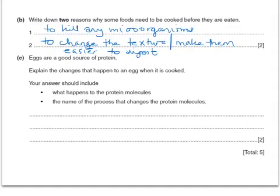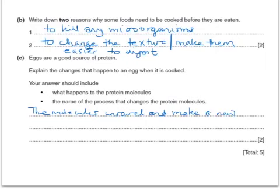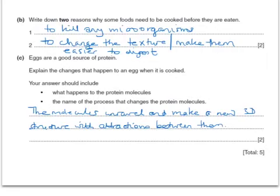The second part of the question says: eggs are a good source of protein — explain the changes that happen to an egg when it's cooked. Your answer should include what happens to the protein molecules and the name of the process that changes them. The protein molecules unravel and make a new three-dimensional structure with attractions between them. This process is called denaturing.